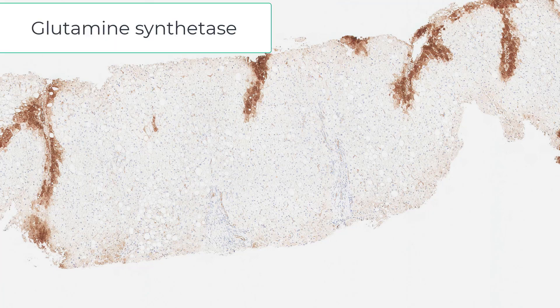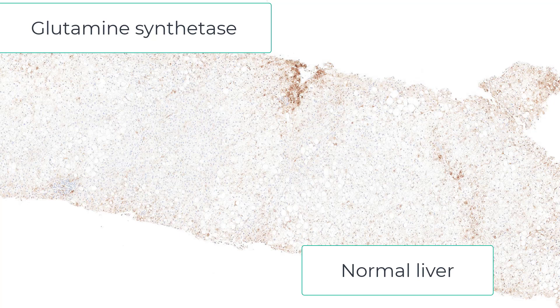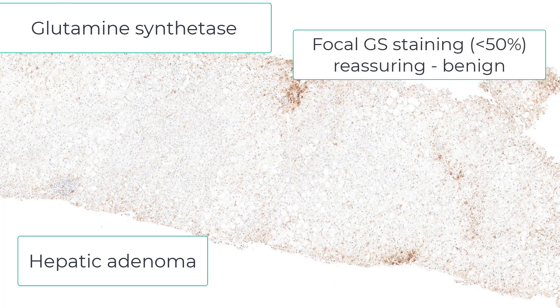Let's take a slightly closer look at the GS stain. This is normal liver staining around the central veins. This is lesional tissue — it's largely negative. But don't be afraid if you see a little bit of GS staining; I've noticed that this does happen with fatty adenomas. Remember, as long as it's not diffusely positive — that is, greater than 50% staining — there's nothing to worry about.